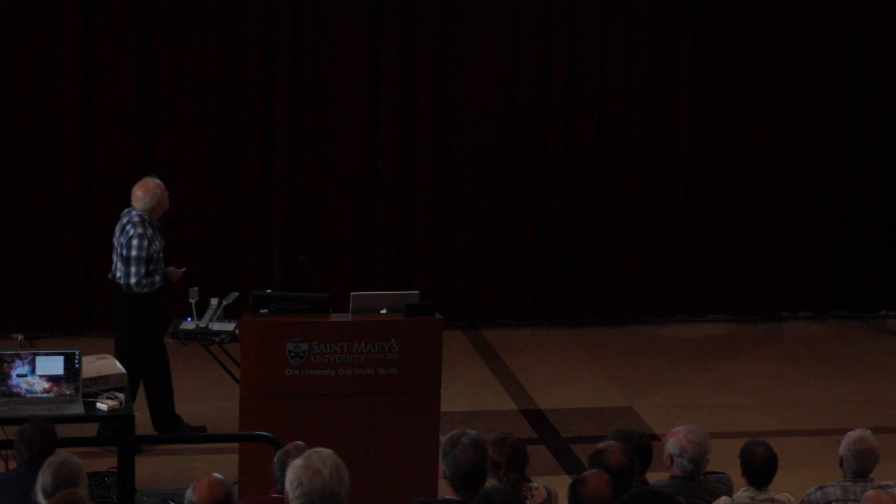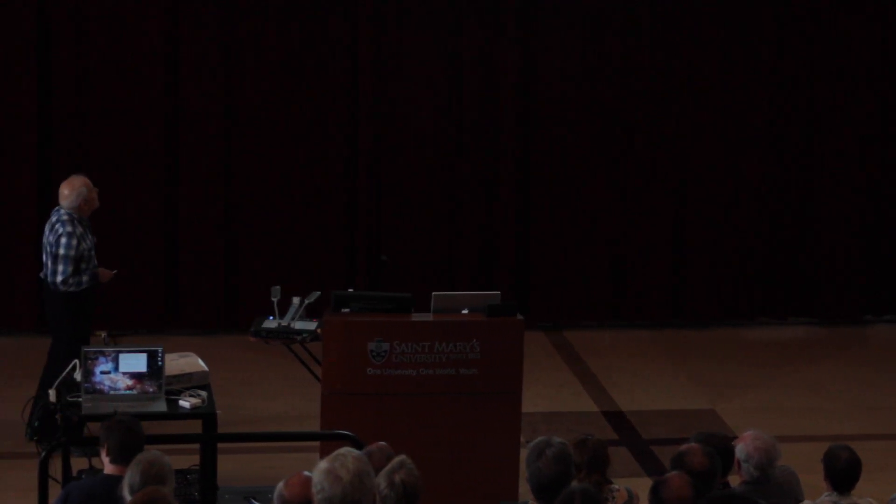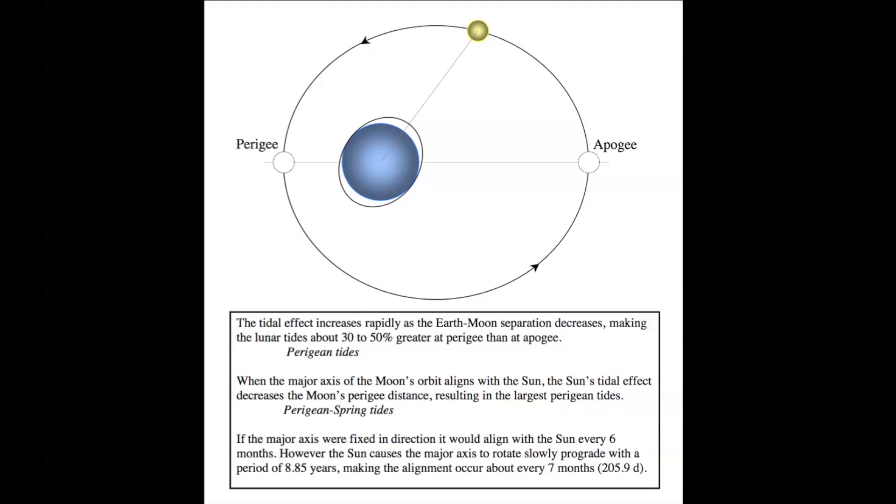And as the moon goes around its somewhat elliptical orbit, its effect on the tides varies depending upon how close it is to perigee or apogee. I'll just read the text there because it's perhaps not that legible from the back of the room. The tidal effect increases rapidly as the Earth-Moon separation decreases, making the lunar tides about 30% to 50% greater at perigee than at apogee.